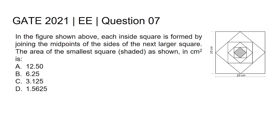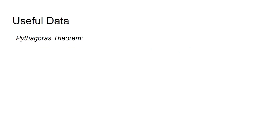Hi all. GATE 2021 Electrical and Electronics Engineering, question number seven. In the figure shown, each inside square is formed by joining the midpoints of the sides of the next larger square. The area of the smallest square in centimeter square is: option A 12.50, option B 6.25, option C 3.125, option D 1.5625.